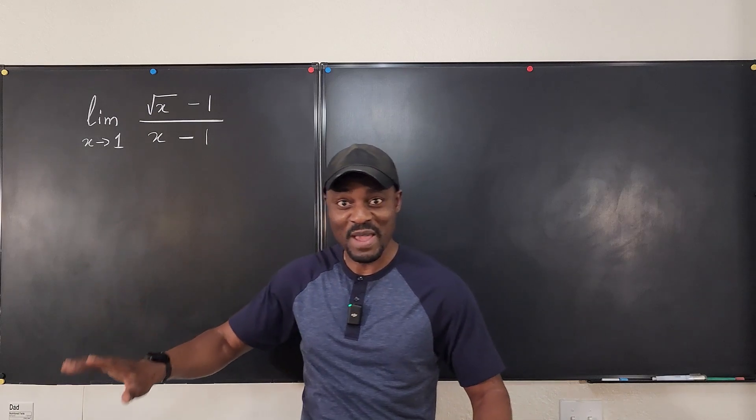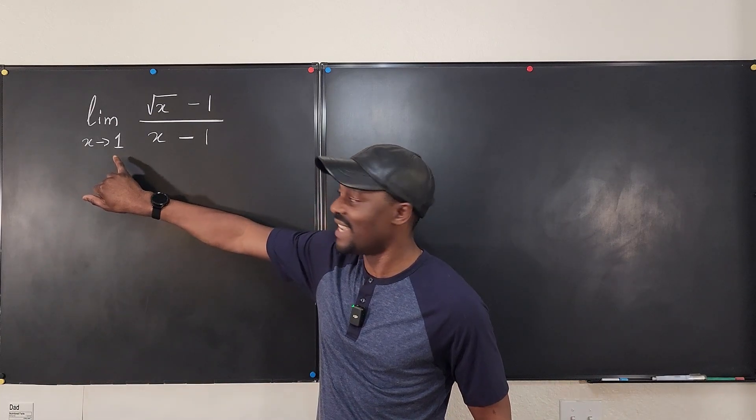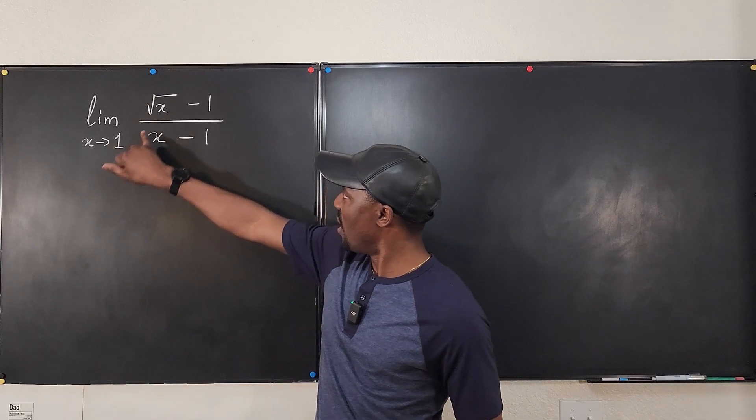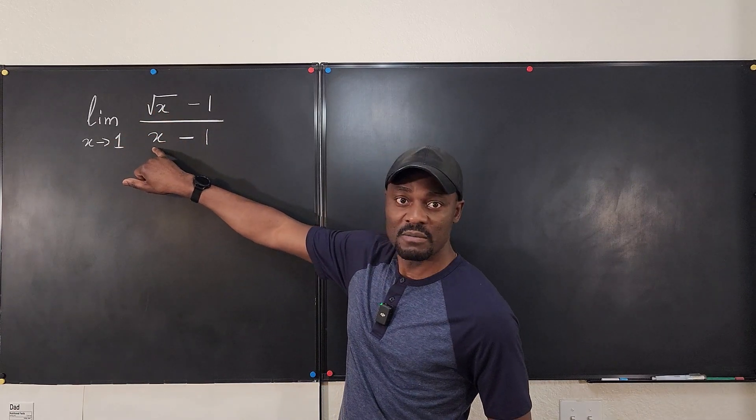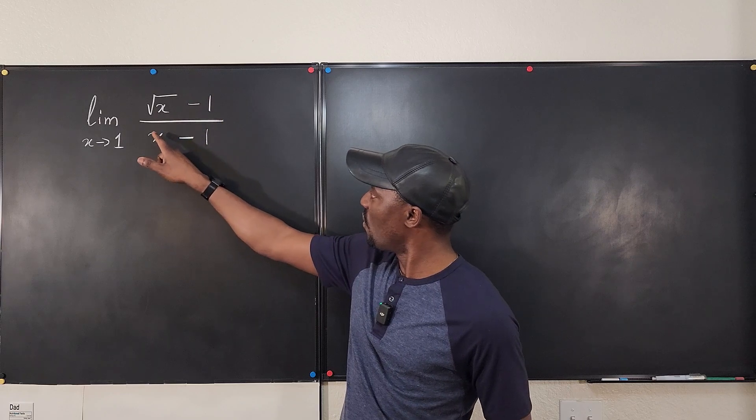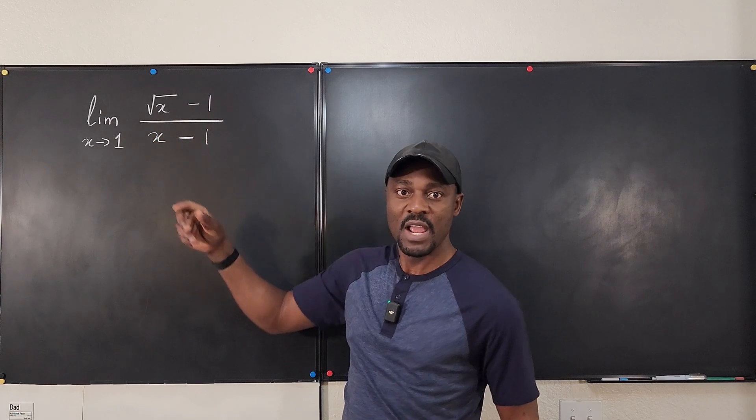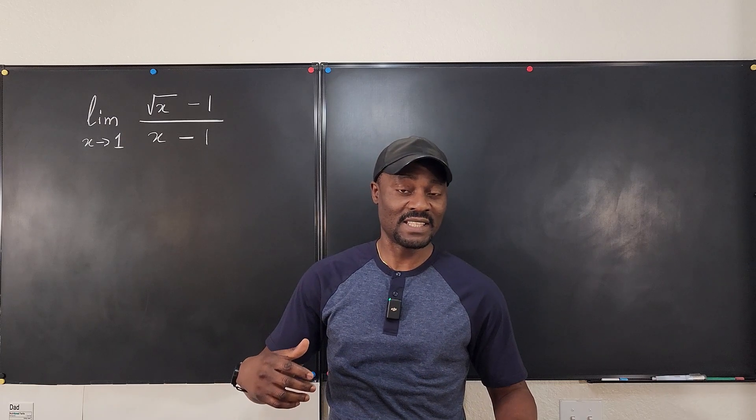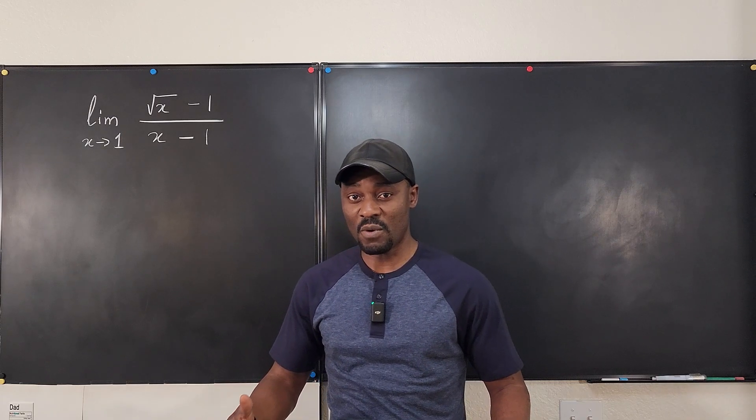The first move you make when the number is not infinity is just plug the number in. And if I plug in 1 to the top and the bottom, I'm going to get 1 minus 1 over 1 minus 1, which gives me 0 over 0. So that is an indeterminate form.